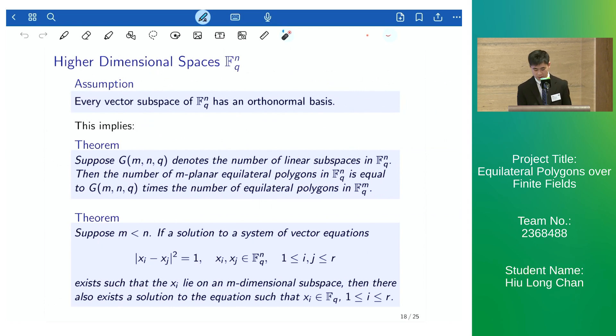In higher dimensional spaces, we might assume that every vector subspace of a finite field has an orthonormal basis. This implies that we can multiply the number of linear subspaces and dimensional linear subspaces in this finite dimensional vector space.